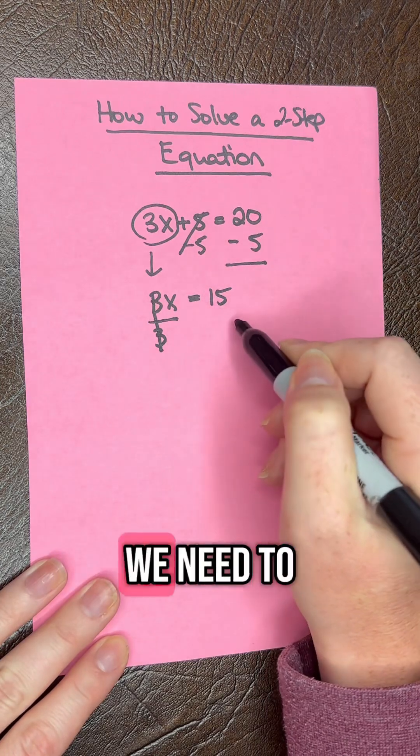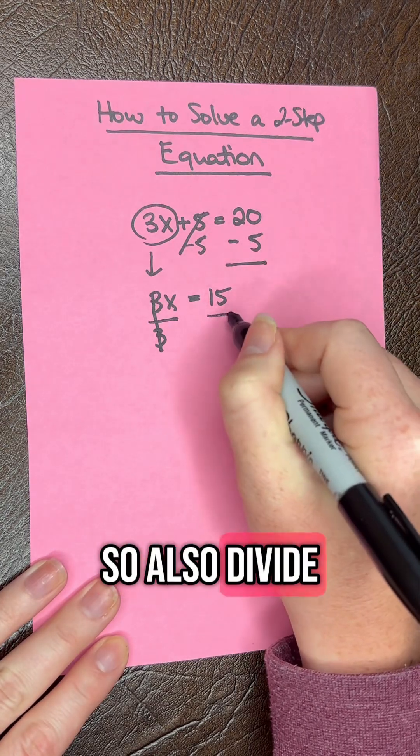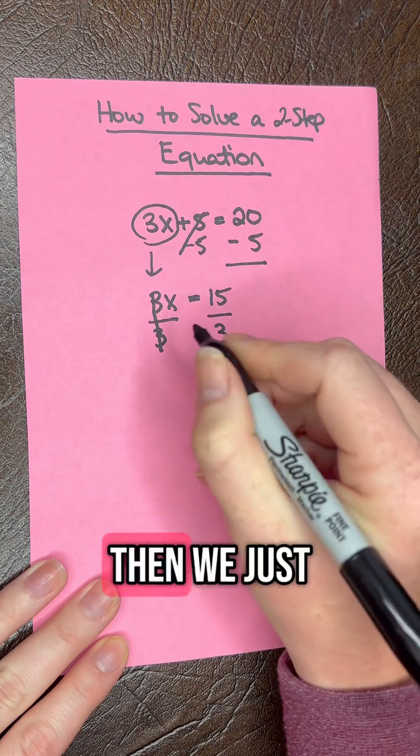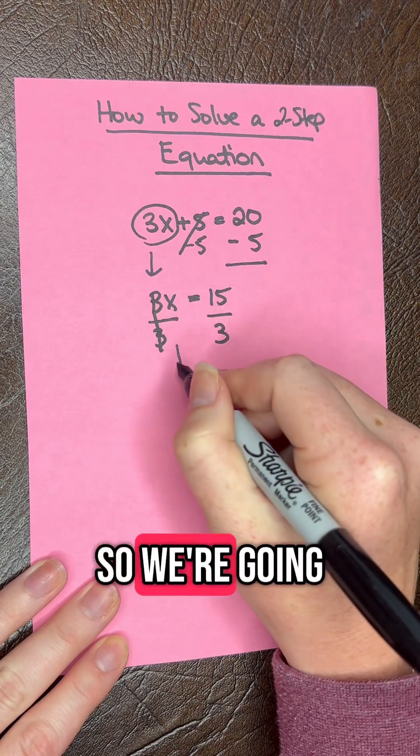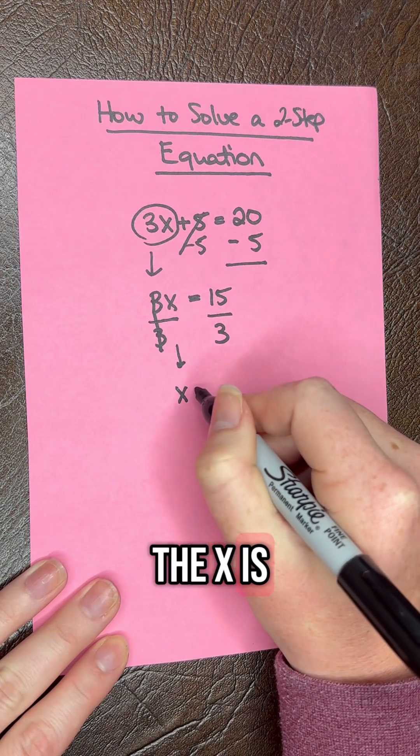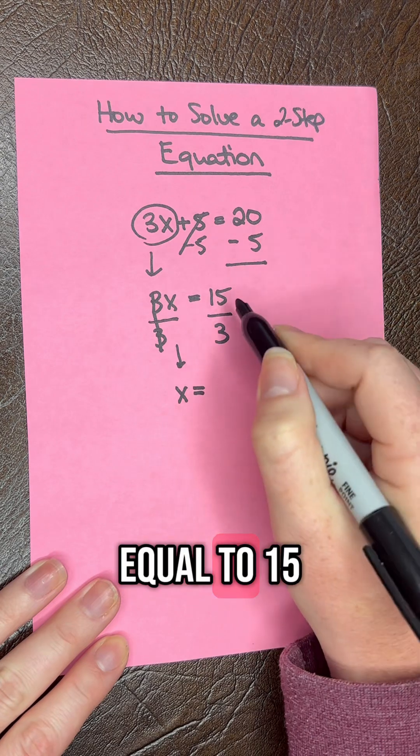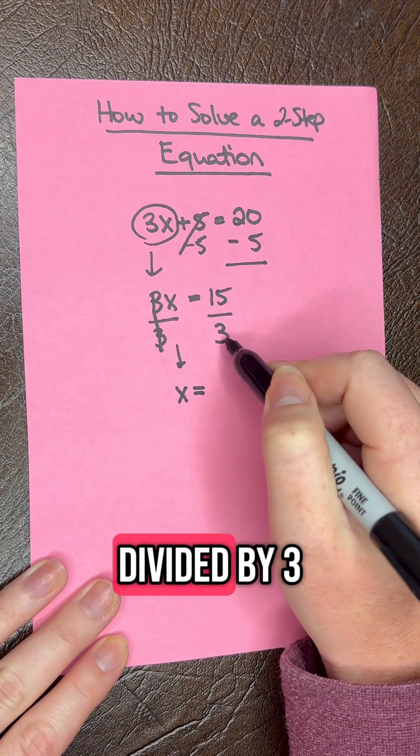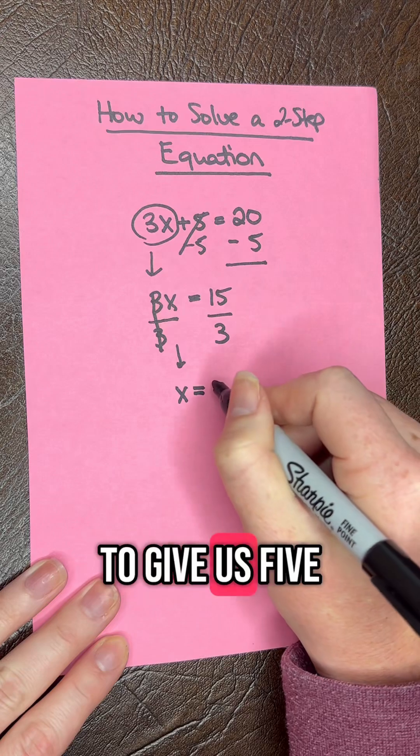Whatever we do to this side we need to do to this side. So also divide by 3 here. Then we just have x here. We're going to carry down the x equals 15 divided by 3, which is going to give us 5.